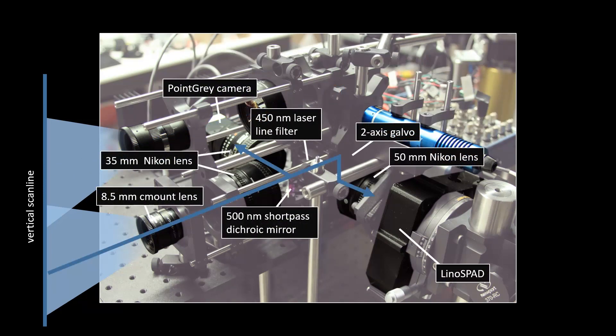The light reflecting back in response to the illumination pulse is collected in another optical path and directed to the linear SPAD array. A wavelength-dependent beam splitter sends the ambient response of the scene to a conventional computer vision camera. Using a second galvo mirror, the SPAD array is scanned together with the laser line.